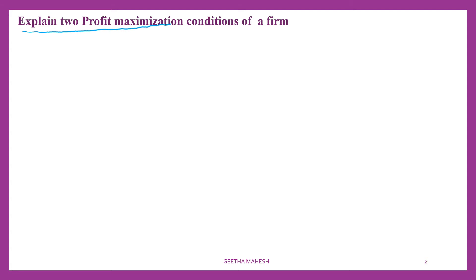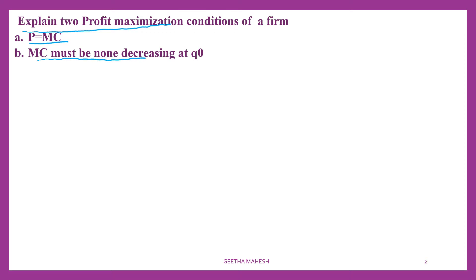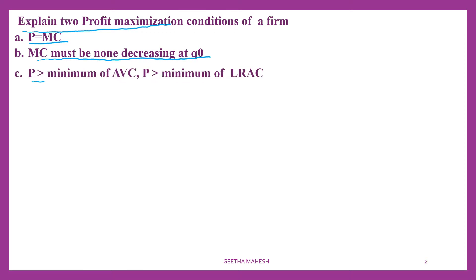What are the conditions essential for a firm to maximize its profit? The first one is price is equal to MC. The second one: MC must be non-decreasing at Q0. The third thing: price is greater than minimum of AVC if it is the short run. In the long run, price must be greater than minimum of LRAC — long run average cost.